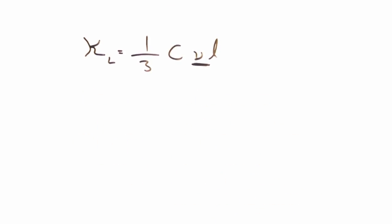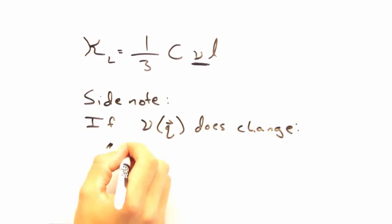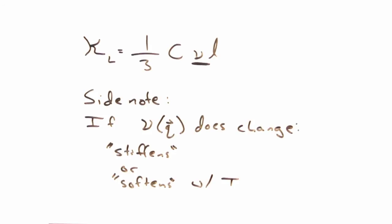Yeah, this is a really good assumption. When the group velocity does change significantly with temperature, it's actually so unusual that we have special terms. We say that the lattice is either stiffening or softening with temperature. Today, though, we'll assume it's a nice boring lattice where the group velocity is temperature independent.